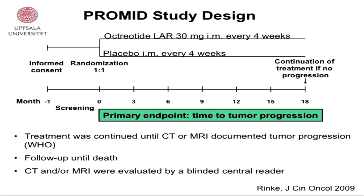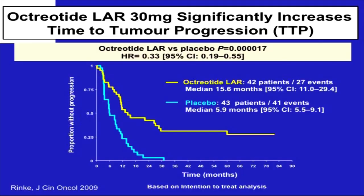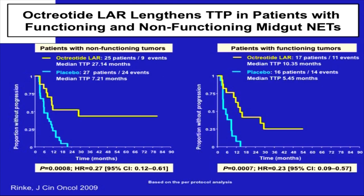This is the PROMID study: octreotide LAR 30 mg every 4 weeks compared to placebo in patients with carcinoids. Octreotide LAR prolonged progression-free survival significantly — by about half a year compared to placebo — and the effect was the same in functioning as in non-functioning tumors.